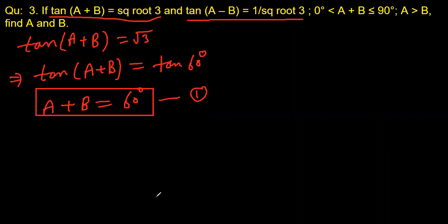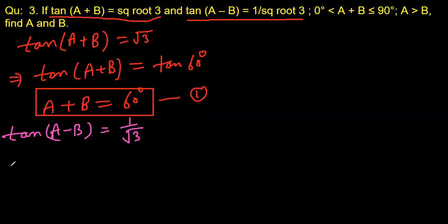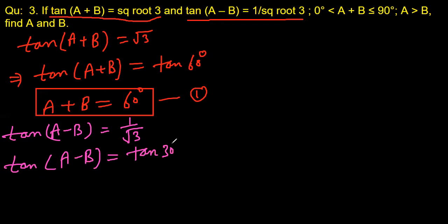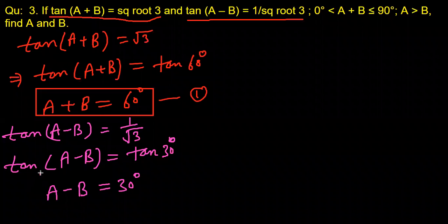Now let's look at the second statement: tan(a-b) = 1/√3. We know that tan(30°) = 1/√3, so we write tan(a-b) = tan(30°). Just like the previous case, tan cancels on both sides, giving us a-b = 30°. This is equation number two.